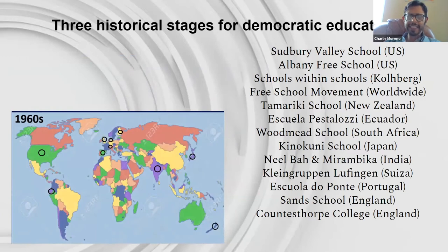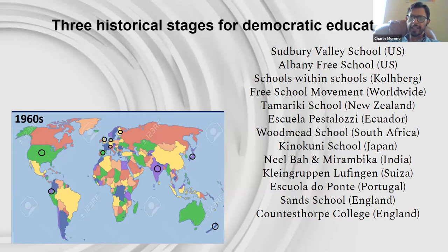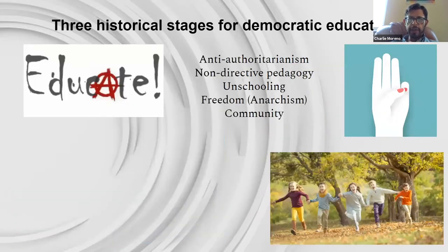Then later on in the 1960s, the people from the 1920s had written their own books and left the testimony of their initiatives. All these initiatives got into the hands of people from all around the world. This is not a European-only movement — in the 60s, it becomes global. You have schools of different kinds: schools within schools in Boston, Tamariki school in New Zealand with native Aboriginal populations, and the Woodmeet school in South Africa integrating children from different racial backgrounds.